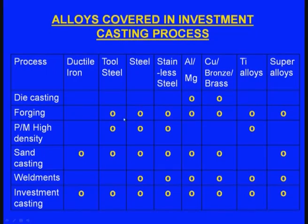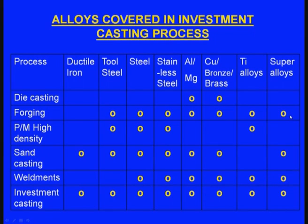If we consider forging, yes tool steels, steels, stainless steel, aluminum, magnesium alloys, copper, bronze, brass, titanium alloys, super alloys can be used for forging, but ductile iron cannot be used for forging.